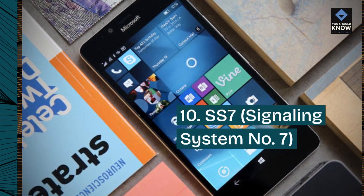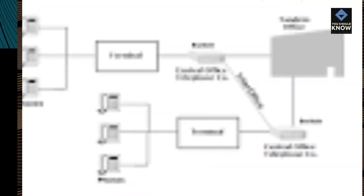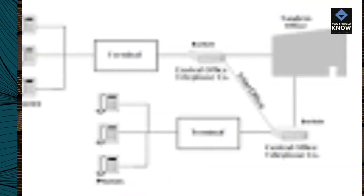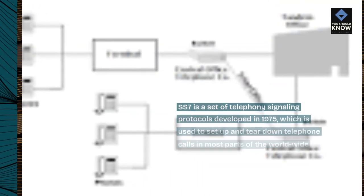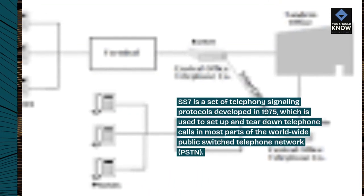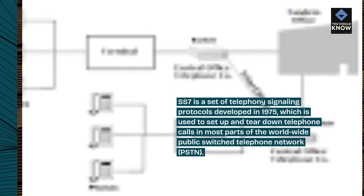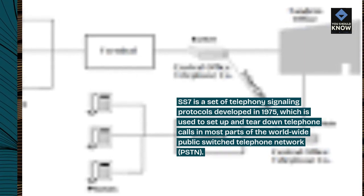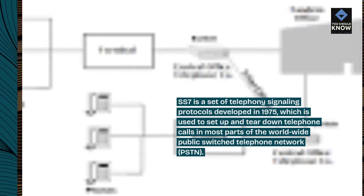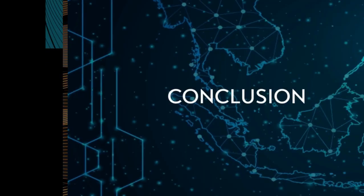10. SS7, Signaling System No. 7. SS7 is a set of telephony signaling protocols developed in 1975, which is used to set up and tear down telephone calls in most parts of the World Wide Public Switch Telephone Network (PSTN).